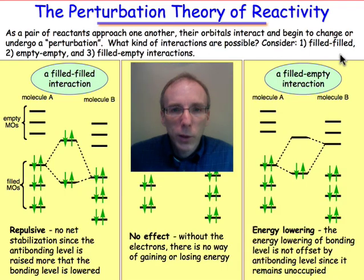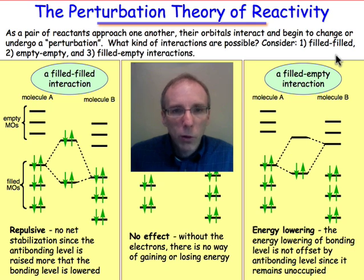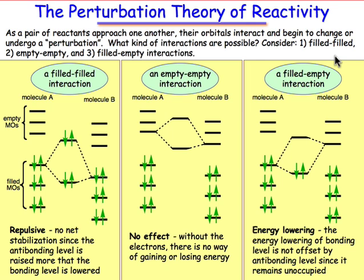In this webcast, we're going to consider in a general way what happens when a pair of molecules, molecule A and molecule B, begin to approach one another along a reaction pathway. Specifically, we want to look at the molecular orbital interactions that are involved and all of the possibilities that are worth considering.